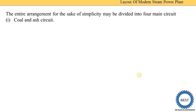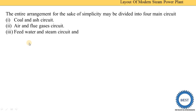For the sake of simplicity, we divide into four main circuits. First is the coal and ash circuit, similar to what we eat and the byproducts we remove. Second is the air and flue gas circuit, compared with our human body's air inhalation system. Third is the feed water and steam circuit — we drink water, it goes to the kidney and is removed from our body with impurities. And fourth is the cooling water circuit — our body is cooled by the atmosphere or air conditioning.